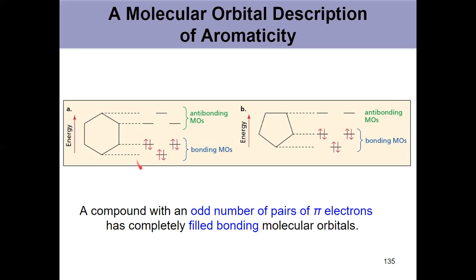Six pi electrons in benzene completely fill the bonding molecular orbitals, nothing in the anti-bonding molecular orbitals. And that's where the delocalization energy comes from. The fact that these bonding MOs are lower in energy than they would be otherwise.